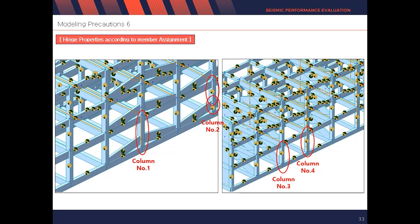If you look at the following picture, we can see the difference between column 1 and column 2. Considering the hinge properties of these columns, only one property is shown in column 1, while there are two properties shown in column 2. So depending on that member assignment, the result of pushover analysis will be different. Engineers must be careful about this issue.